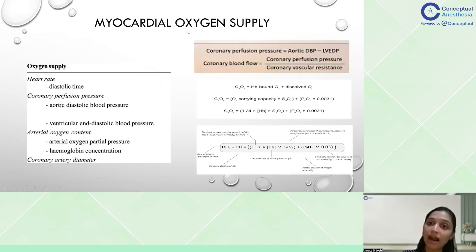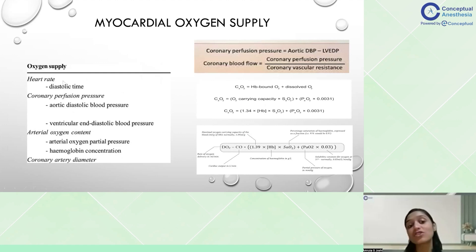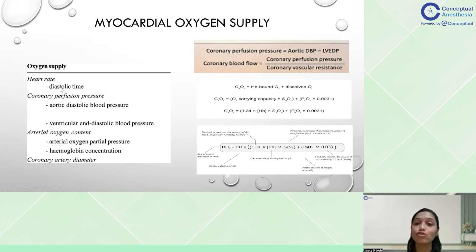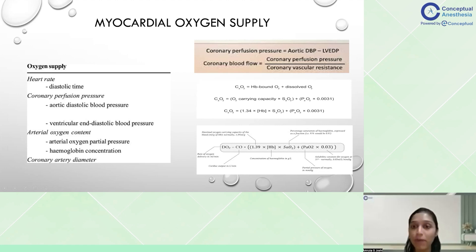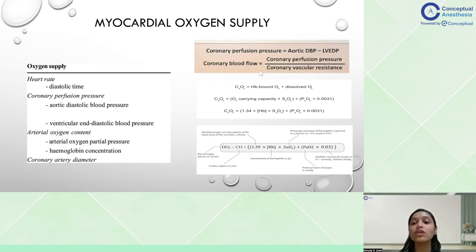Now for myocardial oxygen supply — how does the heart meet its demand? First: heart rate and diastolic time. Diastolic time is when coronary blood flow is maximal, so tachycardia must be controlled to ensure adequate diastolic time. Second: coronary perfusion pressure, given by aortic diastolic blood pressure minus left ventricular end-diastolic pressure. The difference between these two determines coronary perfusion pressure, and blood flow equals coronary perfusion pressure divided by coronary vascular resistance.